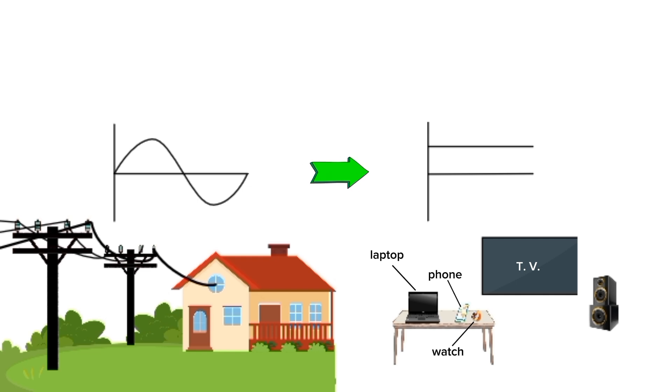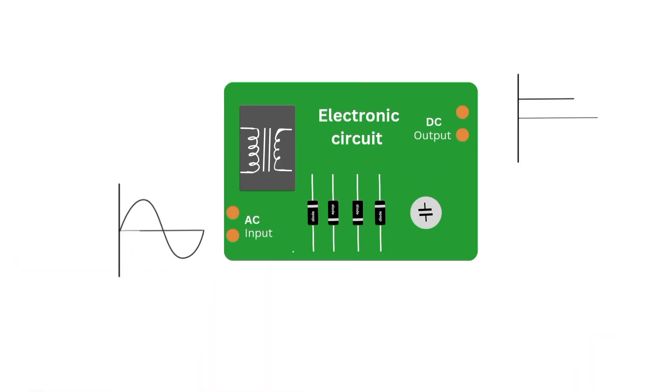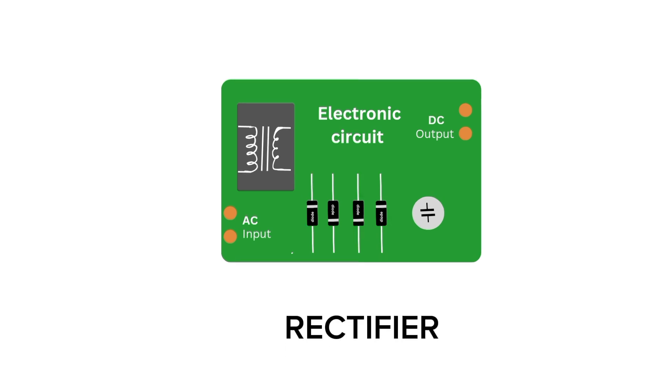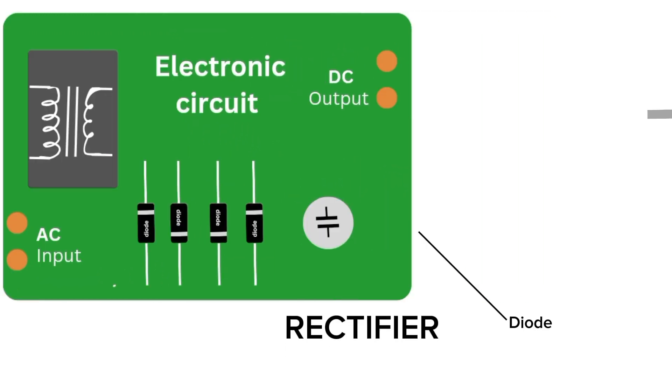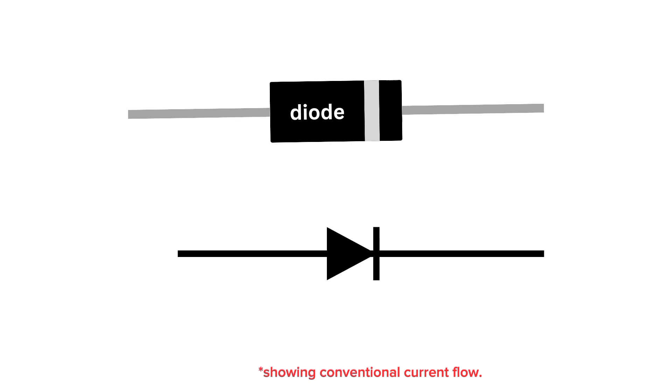Therefore, we need to convert AC to DC through a process called rectification. An electronic circuit that rectifies AC into DC is called a rectifier. A rectifier consists of diodes. A diode is a semiconductor device that allows current to flow through it in only one direction.